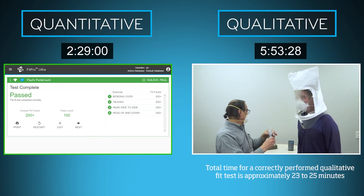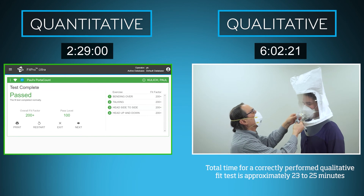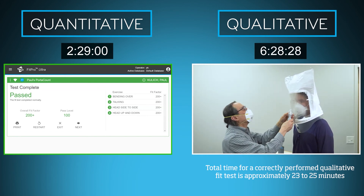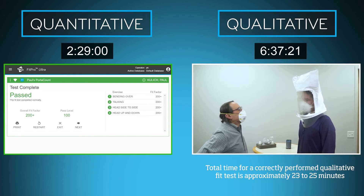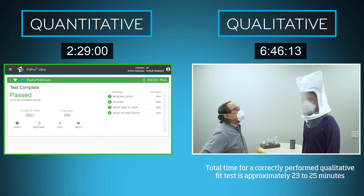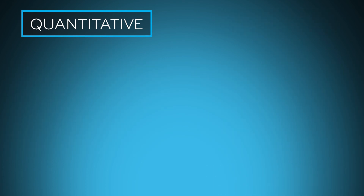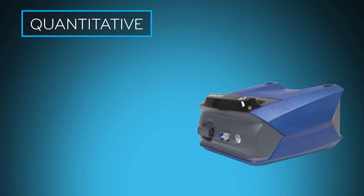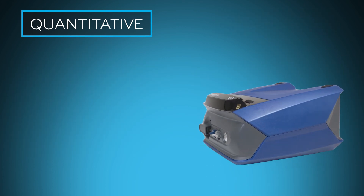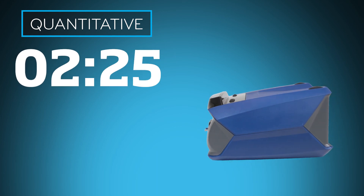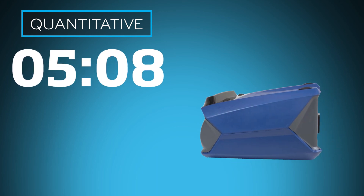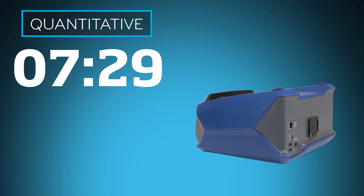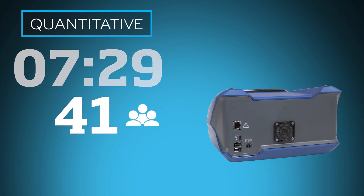In total, a single correctly performed qualitative fit test takes approximately 23 to 25 minutes per fit test. For a quantitative fit test using a PortaCount instrument, the total time including the comfort assessment period is 7 minutes and 29 seconds.